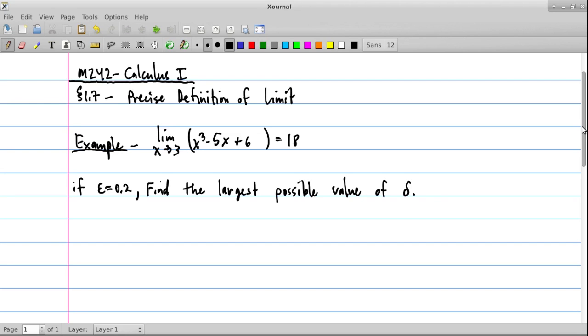But then you're told that if epsilon is 0.2, our job is to now find the largest possible value of delta.